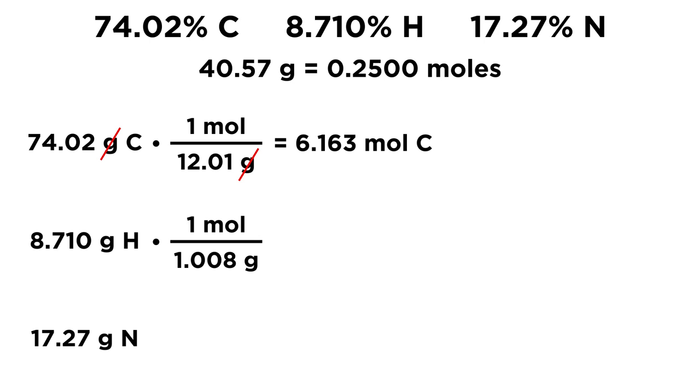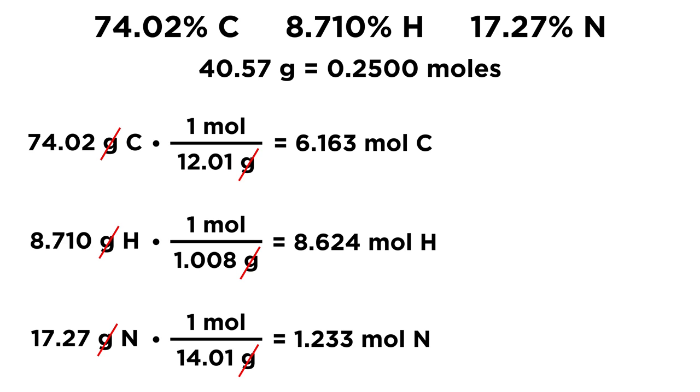Now for hydrogen, let's multiply by 1 mole over 1.008 grams. That is the atomic mass of hydrogen. Grams will cancel, and we have 8.624 moles of hydrogen. Lastly, for nitrogen, we multiply by 1 mole over 14.01 grams. That's the atomic mass of nitrogen. Grams will cancel, and we have 1.233 moles of nitrogen.